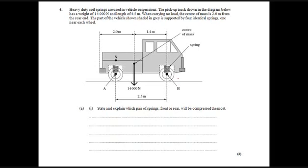OK. Question four. A little bit of a tricky explanation here. So, we need to try and work out which springs will be compressed more. OK. We can see the center of mass here is closer to the rear axle than the front axle. OK. So, that's the first thing I'd say. The center of mass is closer to the rear axle.